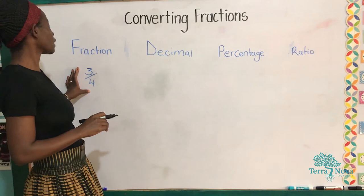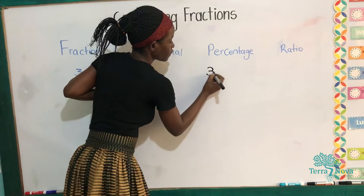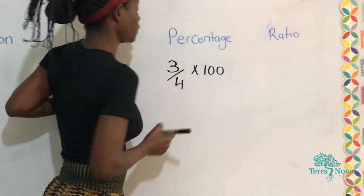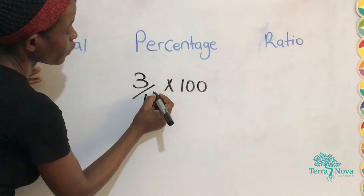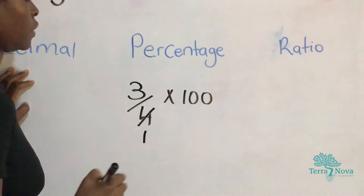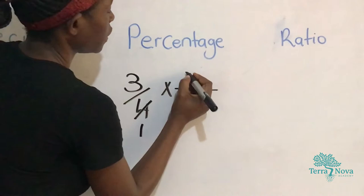We are going also to work out our fraction into a percentage. So we are going to get 3 out of 4 times 100. When we divide 4 by 4, we get 1. When we divide 100 by 4, we get 25.